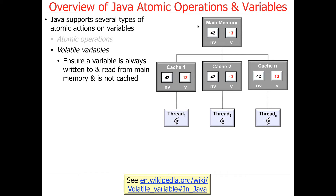Write-back says write to the cache and come right back, whereas write-through says write to the cache and then don't stop — go and write to memory. So when a volatile variable is read or written, it goes directly — does not pass go — directly to main memory and stores it there. Volatile variables in Java have a slightly different meaning than volatile variables in C and C++, as we'll see later.